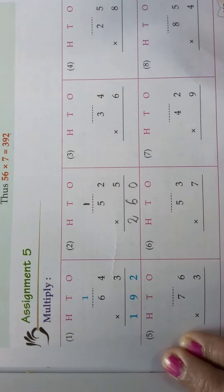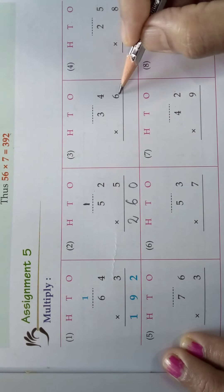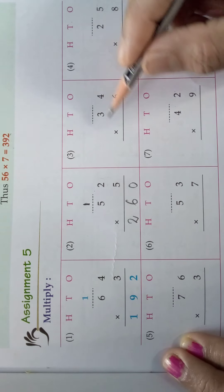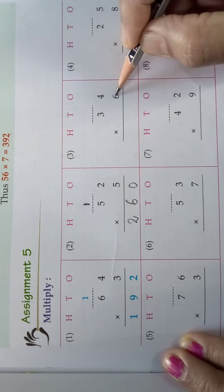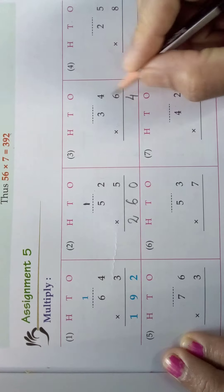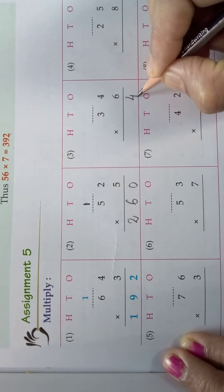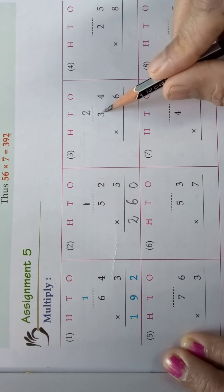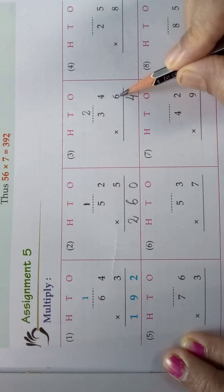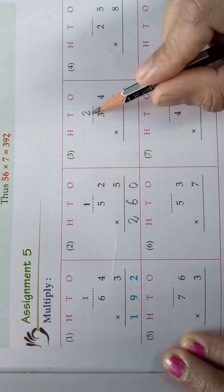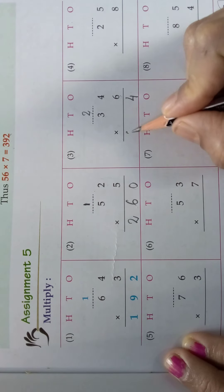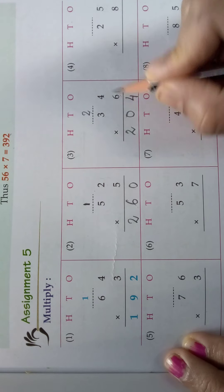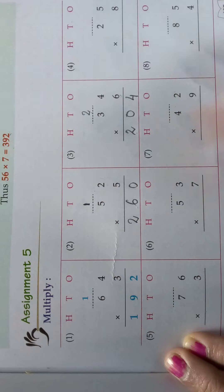One more sum: 34 into 6. 4 sixes are 24, so write 4 in the ones place and carry 2, because 24 is 2 tens plus 4 ones. Now take the tens-place digit 3 and multiply by 6 — 3 sixes are 18, plus carry 2 is 20. So the answer is 204. In this way you should do the remaining sums.